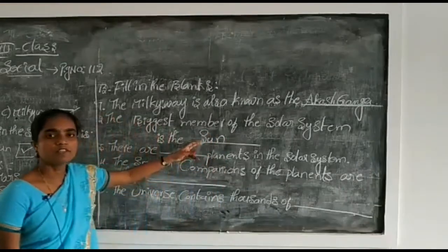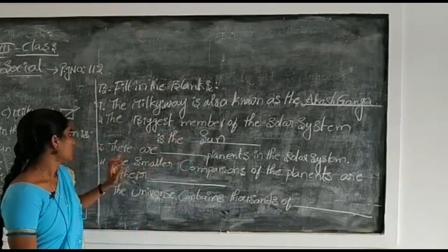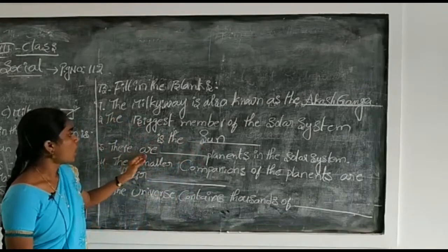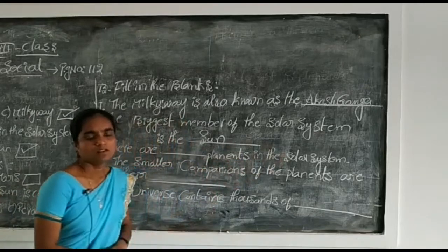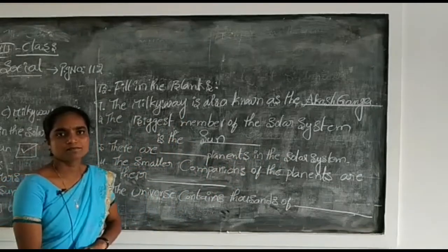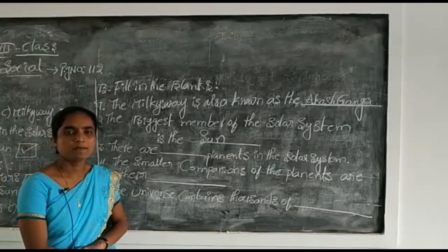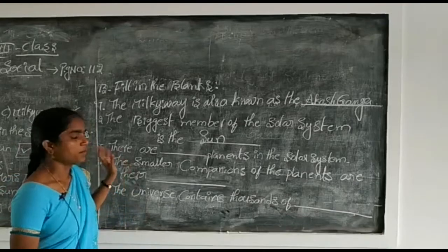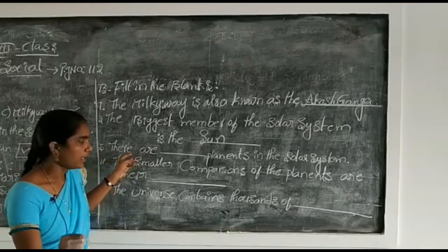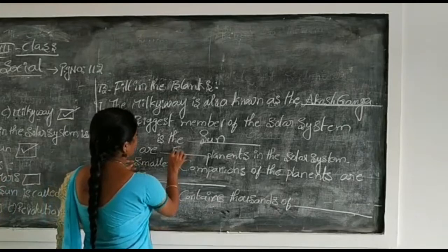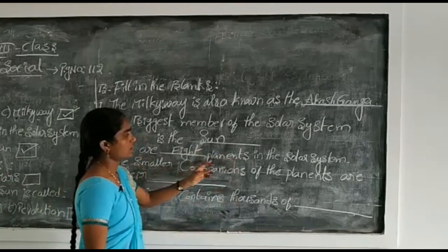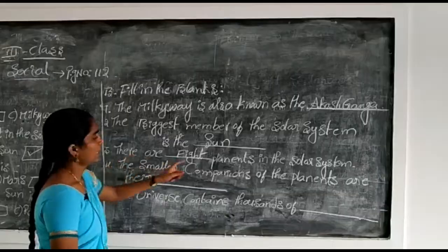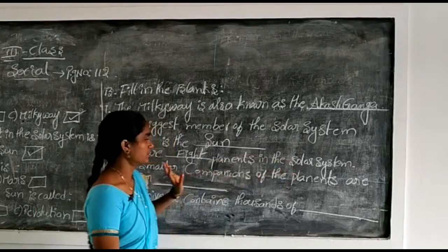Third point: there are how many planets in the solar system? How many planets? There are eight planets in the solar system.